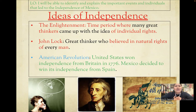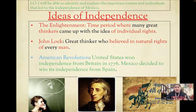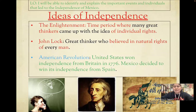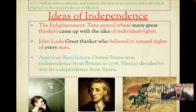This idea of revolting against your government didn't come out of nowhere — it came from something called the Enlightenment in Europe. The Enlightenment was a time period where great thinkers were coming up with ideas about you as a person. One of these thinkers was John Locke. He believed in the idea of the natural rights of men, which is similar to our individual rights today. Your individual rights say that there are certain things the government cannot take away from you. We get this idea from John Locke's natural rights. He believed that if your government did not serve you or was treating you poorly, you had every right to replace or revolt against that government and create a new one.